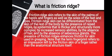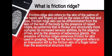What is friction ridge skin? Friction ridge skin refers to the skin of the palms of the hands and fingers as well as the soles of the feet and toes. It can be differentiated from the skin of the rest of the body by the presence of raised ridges, thicker and structurally more complex epidermis, increased sensory abilities, the absence of hair, and the absence of sebaceous glands. The presence of friction ridges enhances friction for grasping. The term 'fingerprint' refers to an impression left by the friction skin of a finger rather than the anatomical structure itself.